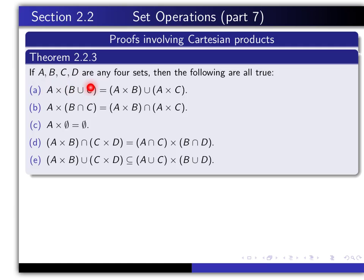And that Y is an element of B union C, which is a union of sets, and that says that Y is either an element of B or an element of C. And so you would follow those two cases through as to whether Y is an element of B or an element of C, in order to then show that the ordered pair X, Y lies in the right-hand side.